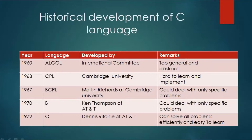Then in 1960, we had a language called ALGOL developed by an International Committee, but it was too general and abstract. In 1963, we had a language called CPL developed by Cambridge University. It was difficult to learn and implement. When choosing any language, we need a balance in efficiency as well as ease of programming.